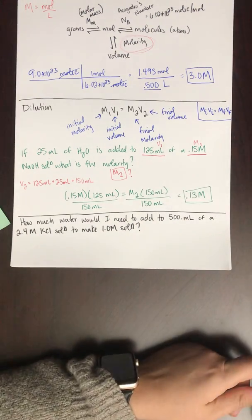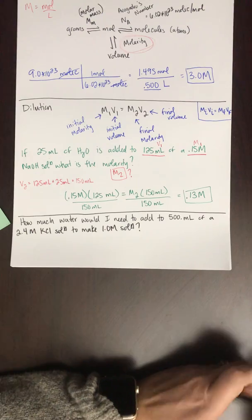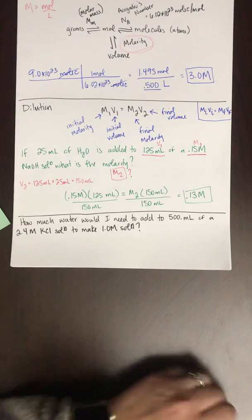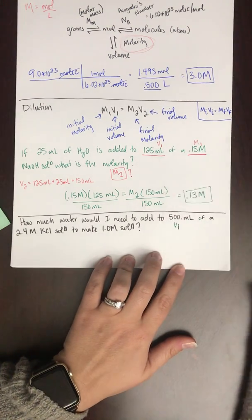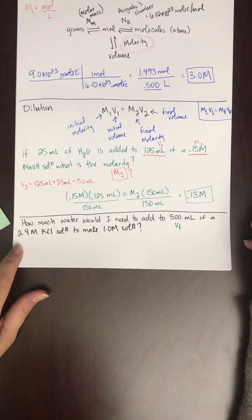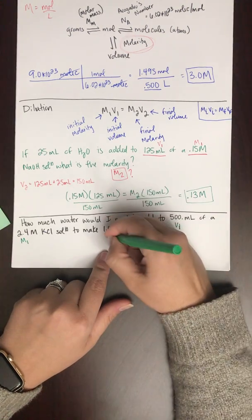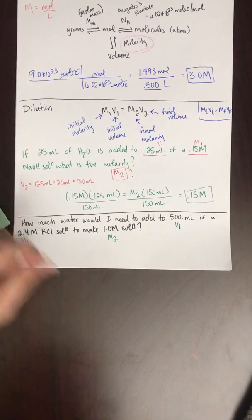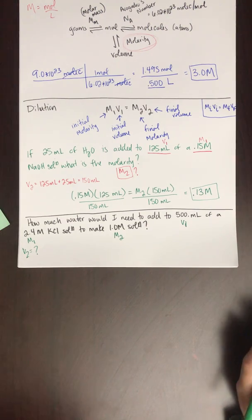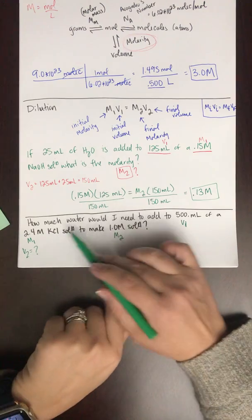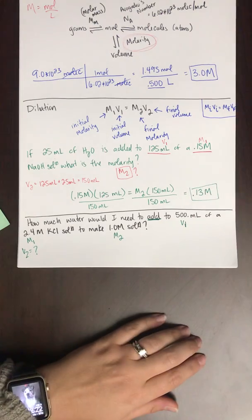Okay, how much water would I need to add to 500 milliliters of a 2.4 molar potassium chloride solution to make a 1.0 molar solution? So 500, this is my initial volume, that's V1. 2.4 molar, this is my initial concentration, M1. 1.0 molar, this is my final concentration, M2. What I'm looking for is V2. That's the question. What is V2? But it's not quite that straight because it says how much water would I need to add. So let's think about that because we're already starting with 500 milliliters.